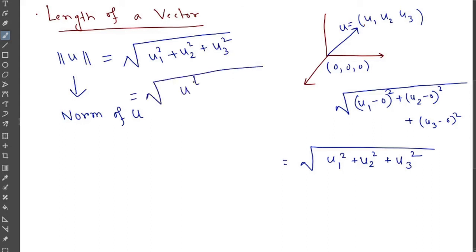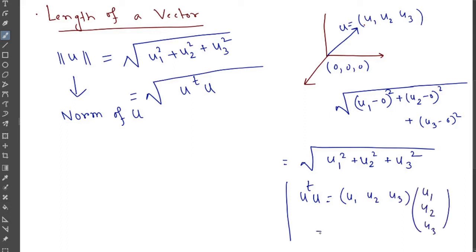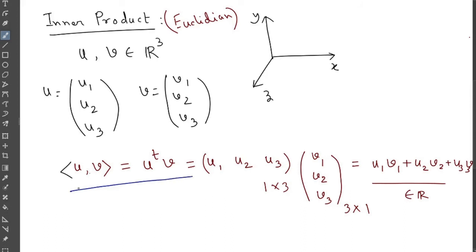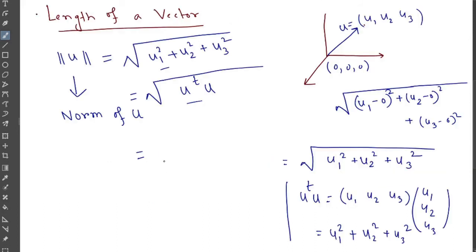So can we write this as u transpose u? Let's calculate: u^T · u = u1² + u2² + u3². Yes! So we can replace this value using u^T u. And according to our earlier definition, the inner product between u and v is u^T v, so using this definition we can write the norm of u as the square root of the inner product of u with itself. This is the first geometric notion from the inner product.